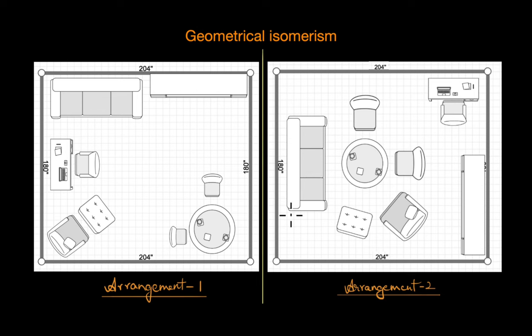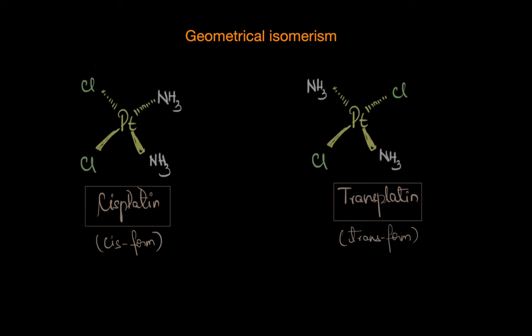Now something similar happens in the case of molecules too. As in, one arrangement can be a life-saving drug and the other, well, not so much. As you can see from this, both coordination compounds have the same central metal ion platinum and the same set of ligands: chloride ions and ammonia molecules.